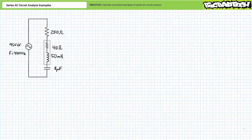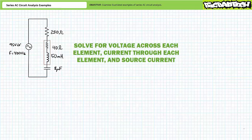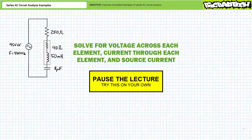Our second illustrated example problem features a series combination of three elements. The first element is a 250 ohm resistor. The second element is a non-ideal 50 millihenry inductor that includes a small internal resistance of 40 ohms. And finally, the third element is an 8 microfarad capacitor. The source has an effective value of 95 volts and an excitation frequency of 400 hertz. We're again being asked to solve for the voltage drop across each element, the current through each element, and the source current. By all means, pause the lecture and try this on your own.